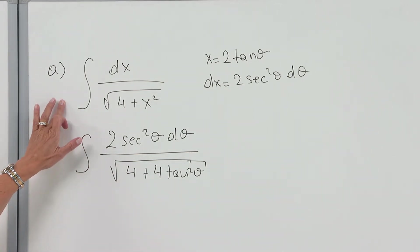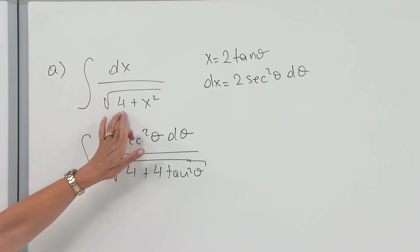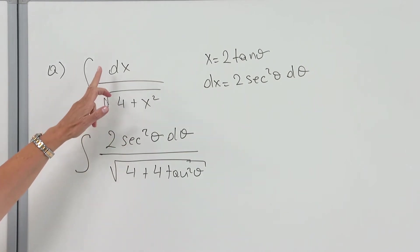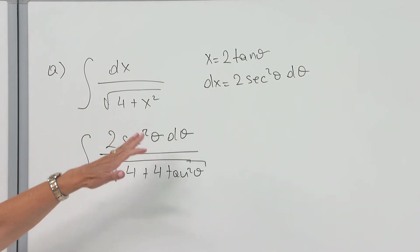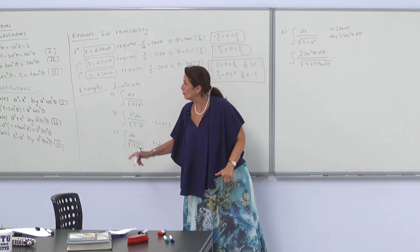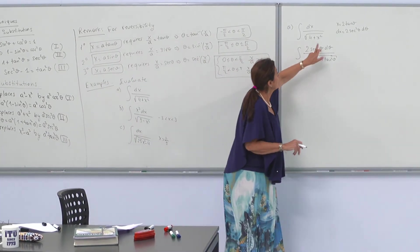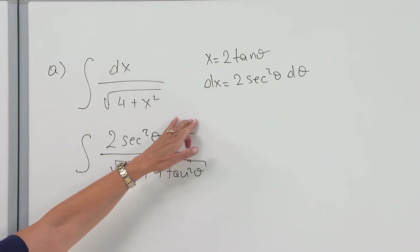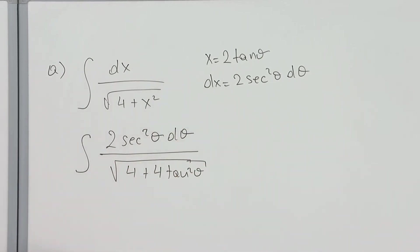Now we will solve this integral. We have a radical with 4 + x² inside. The derivative of this expression is not in the numerator, so my aim is to get rid of the radical. This corresponds to type 2. I substitute x by 2tanθ, and I also write the differential: dx = 2sec²θ dθ.